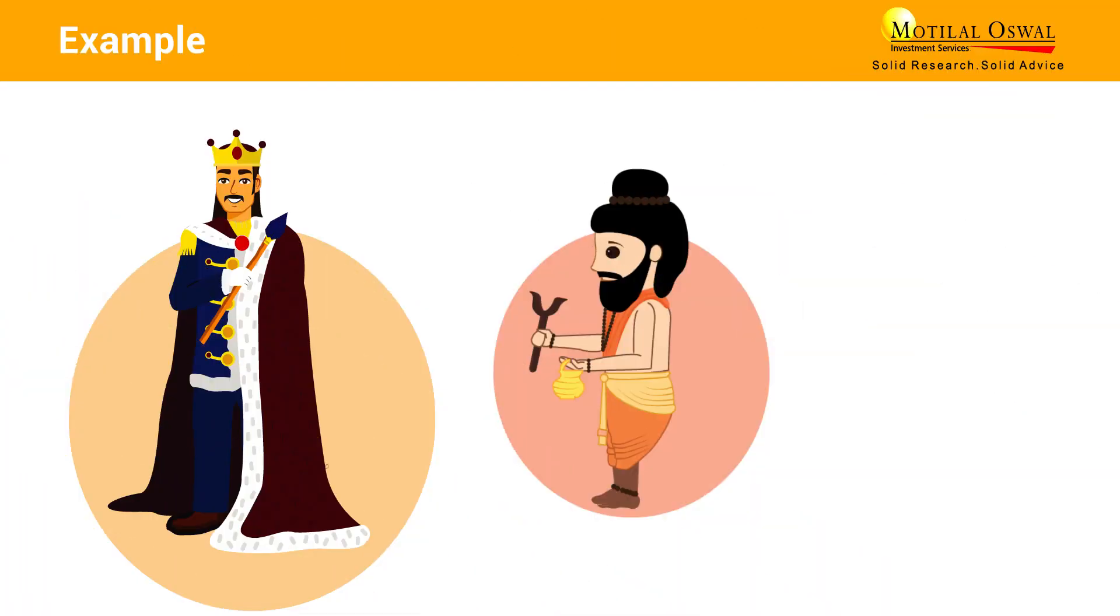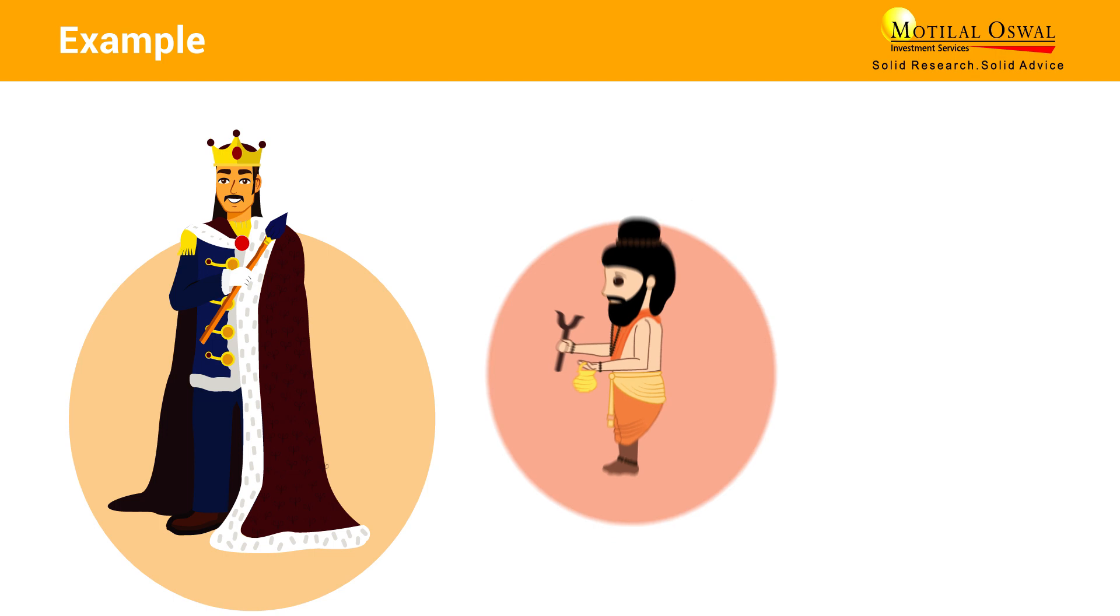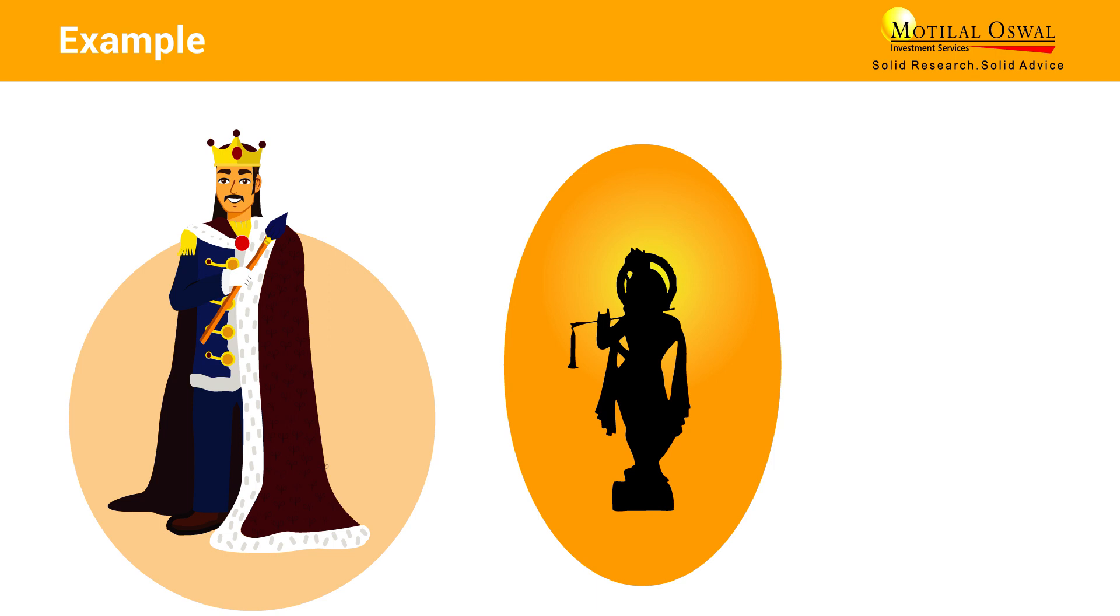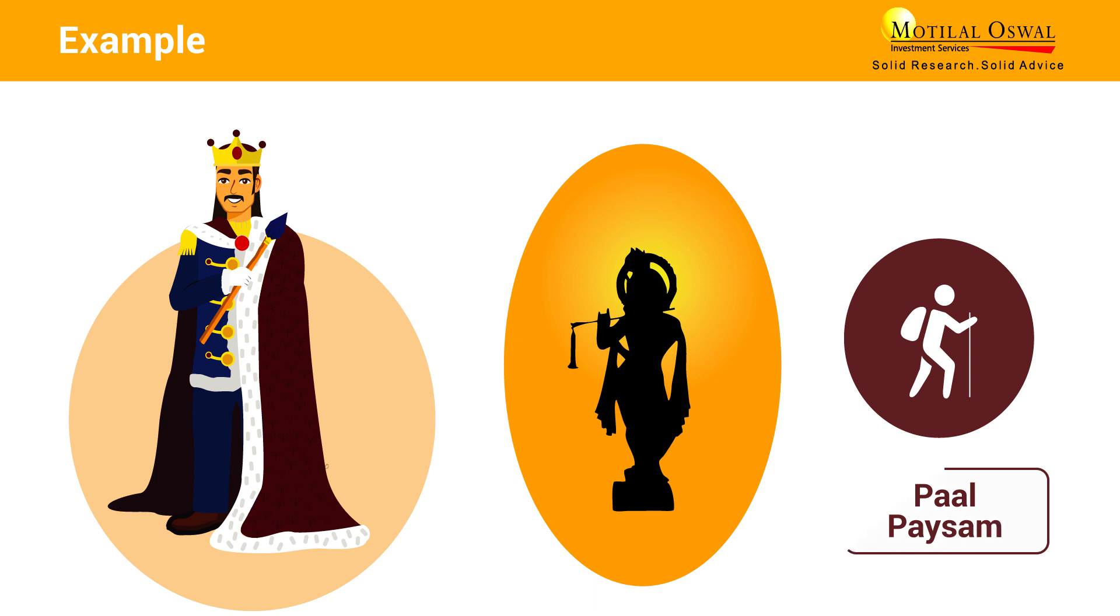It was at that point that Lord Krishna revealed his true identity to the king and told him that he does not have to pay the debt immediately but can do so over time. This is why, to this day, visiting pilgrims are still feasting on Palpaisim and the king's debt to Lord Krishna is still being repaid.